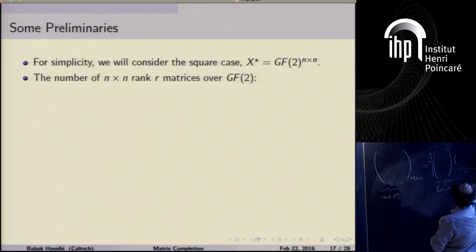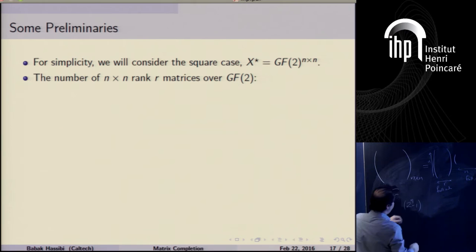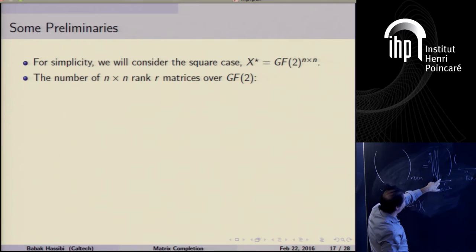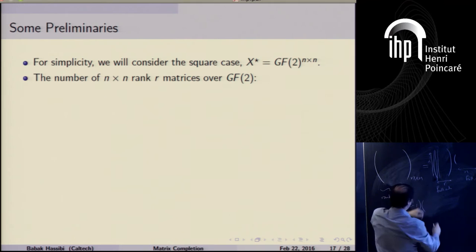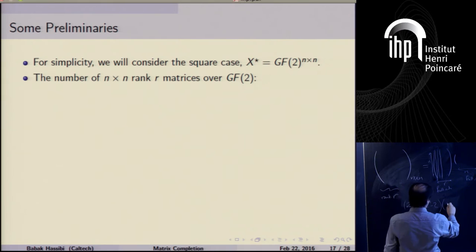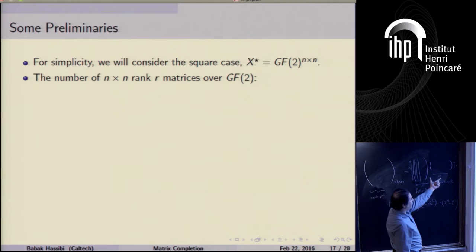The number of n×n rank-r matrices over GF(2) is N(n,r). The first column of the n×r factor has 2^n−1 choices, the second 2^n−2, the third 2^n−4, and so on; similarly for the r×n factor; dividing by the r×r invertible matrices. For small r relative to n, log₂N(n,r) ≈ 2nr. This is our analog of degrees of freedom: to specify X* among all such matrices requires log₂N(n,r) bits, so we need at least that many revealed entries.